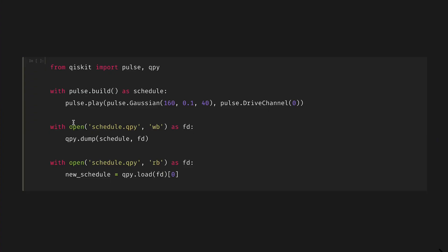We'll start by importing the Pulse and QPY modules from Qiskit. Then we can build a schedule by playing a Gaussian Pulse on drive channel 0, and then save this using QPY as a file called schedule.qpy.